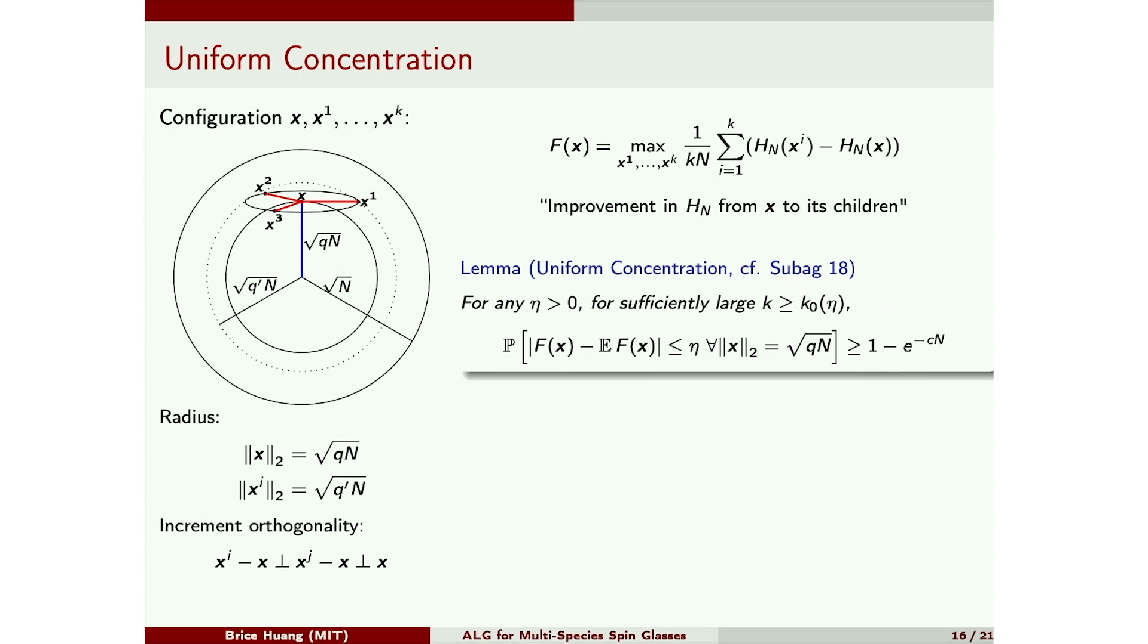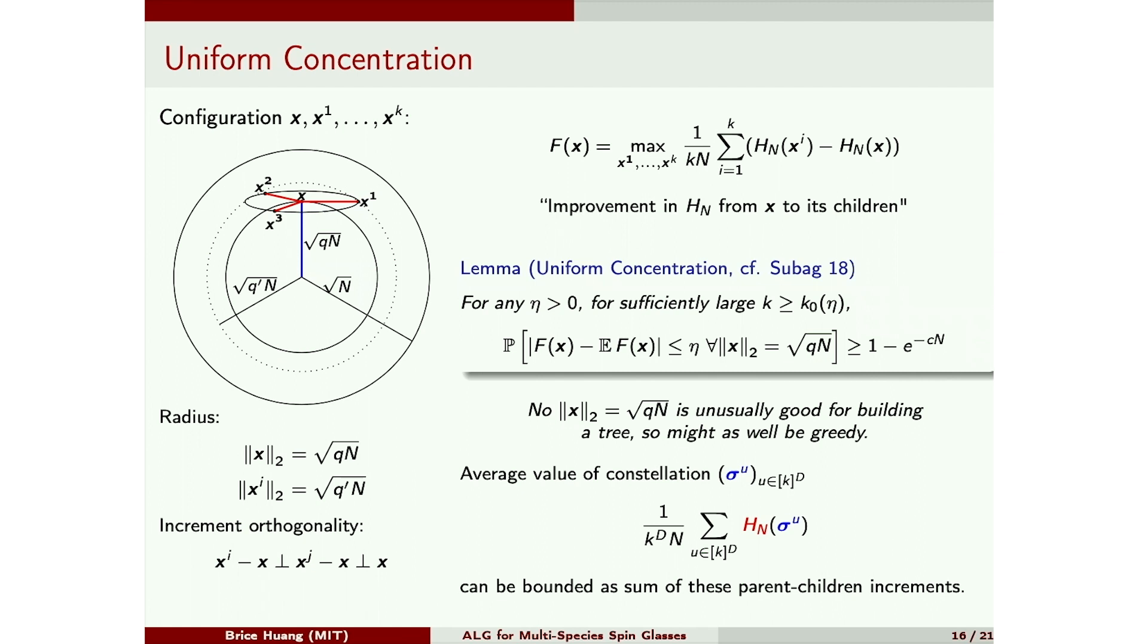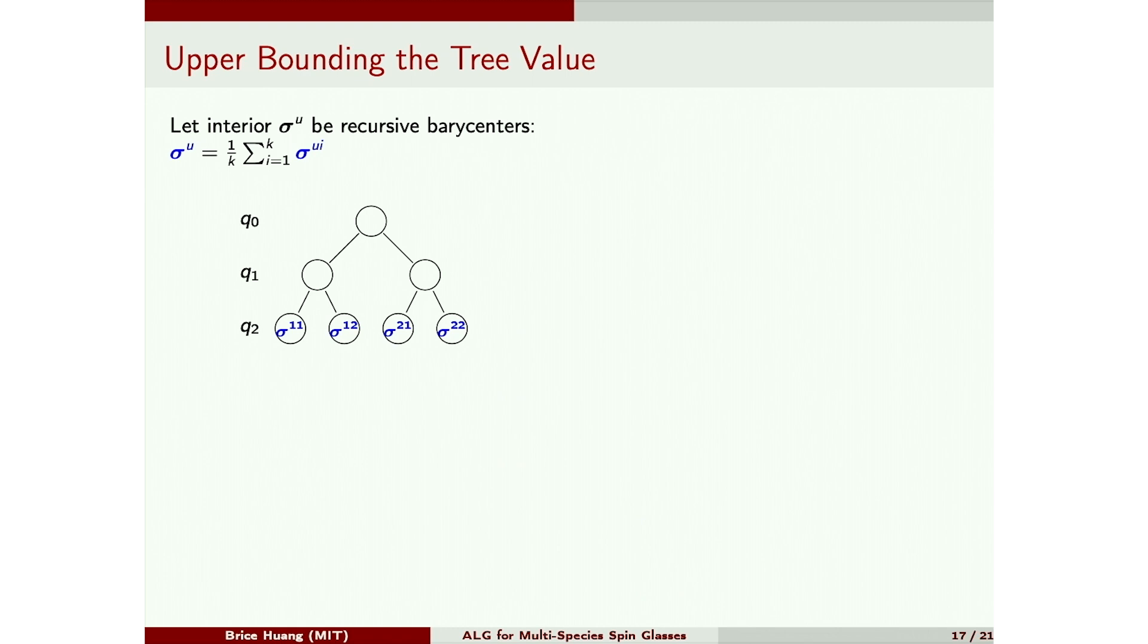Maybe I'll say a few words about the proof. So for a single x, this inside quantity is some average of orthogonal Gaussian increments. So you can imagine that as k gets bigger, this will concentrate better. And when k is big enough, this will concentrate so well for a single x, that this claim follows by just union bounding over a suitable epsilon net of the little sphere. For us, the meaning of this lemma is no x on the little sphere is unusually good or unusually bad for building a tree. Because no matter where you are on the sphere, the best possible improvement you get to your children is the same. So you might as well construct the tree greedily. And we'll see that the average value of this constellation can be upper bounded by a sum of these parent-children increments, which look like f of x.